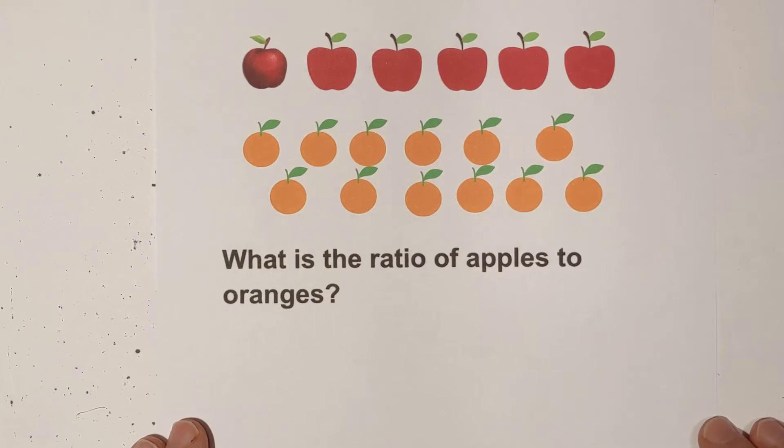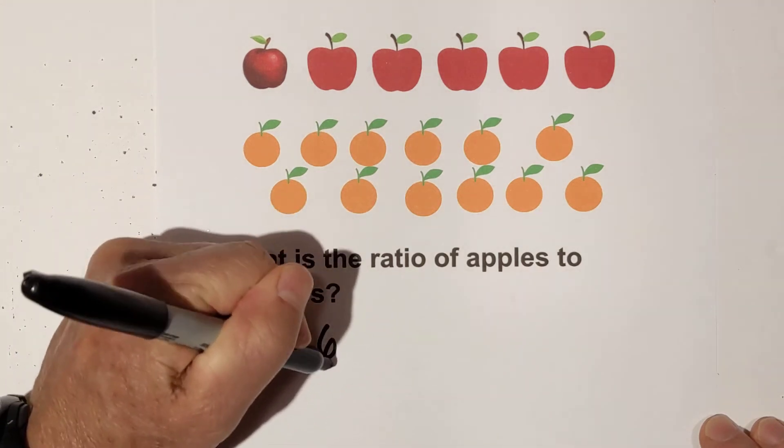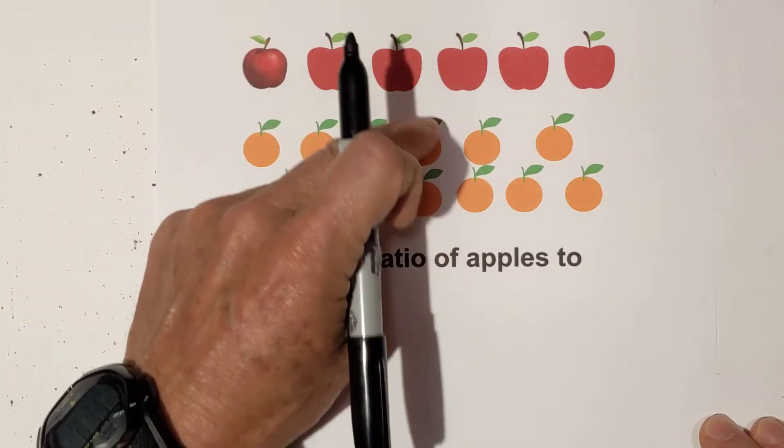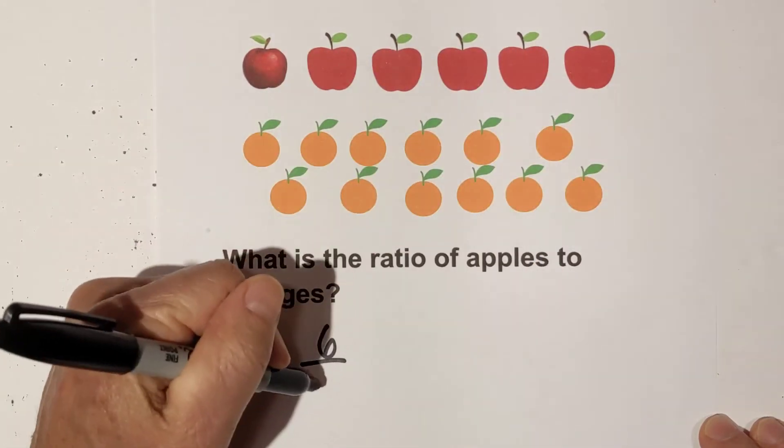With this next example, what is the ratio of apples to oranges? Well, if you count the number of apples, you have six apples, and we'll write it first in fraction form. And then you have one, two, three, four, five, six, seven, eight, nine, ten, eleven, twelve oranges.